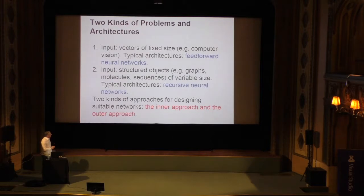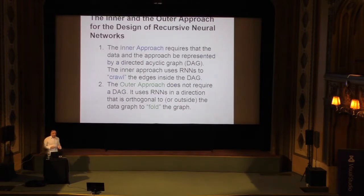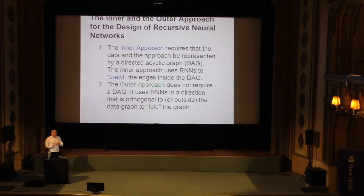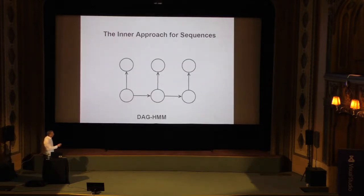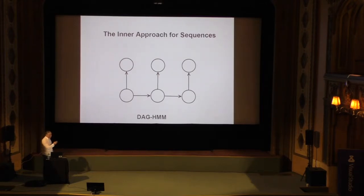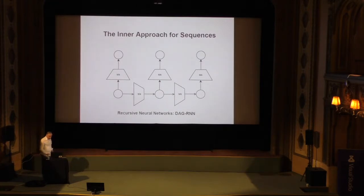To simplify things, I'm going to use two kinds of techniques that I call the inner and the outer approach. In the inner approach, you're using your neural networks to crawl inside the data graphs. For a sequence modeled with an HMM, your neural networks crawl inside the HMM. You can put a neural network on the transitions — shared at each position — and a second neural network on the emissions. That's the inner approach.